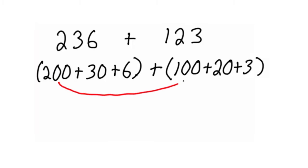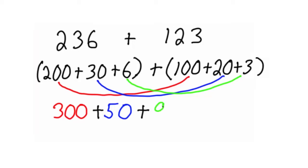So we can add the hundreds: 200 plus 100 equals 300. Then add the tens: 30 plus 20 equals 50. Then add the units: 6 plus 3 equals 9. To get our answer of 300 plus 50 plus 9, or 359.